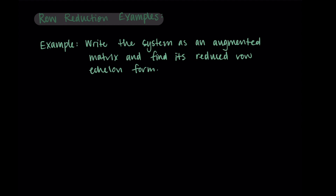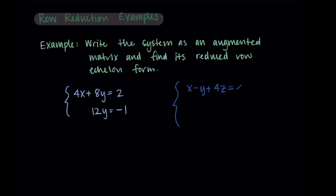The first system we're going to look at is 4x plus 8y equals 2 and 12y equals negative 1. The second system has three equations and three variables: x minus y plus 4z equals 4, 2x minus y plus 4z equals 7, and y minus 5z equals negative 1.